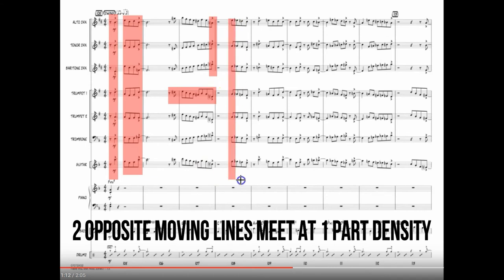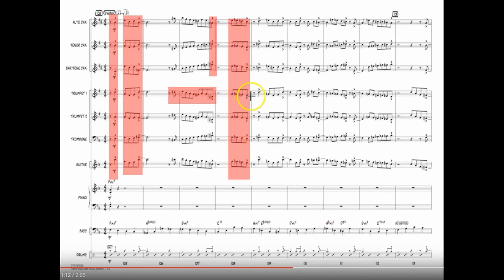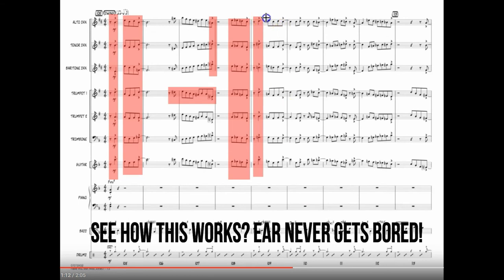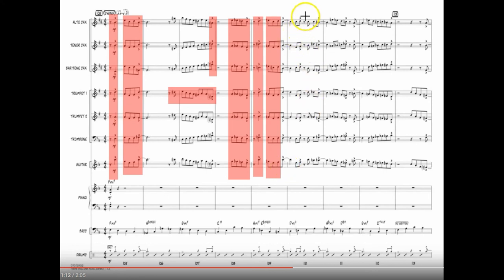Then right here we're back to one part density. Everybody has the same moving line, and then as you would expect he breaks into harmony there. Back to unison up to there, and the end of four is harmony, back to unison right there.